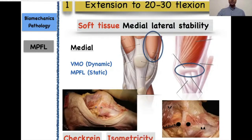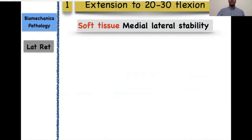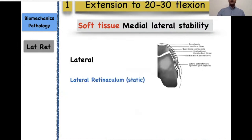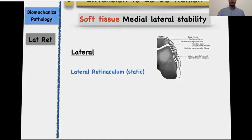The MPFL is relatively isometric throughout the range of motion, which slightly laxes in flexion beyond 20 to 30 degrees. The stability of the soft tissue on the lateral side is provided by the lateral retinaculum.